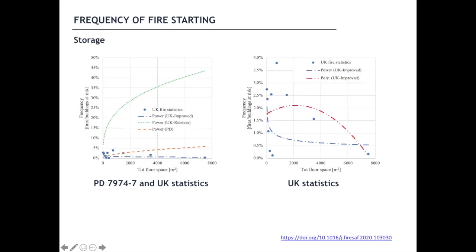In storage, the highest curve is represented by a power law with a positive exponent, but PD 79747 assumes higher values than those described in UK statistics, where a second-order polynomial function best approximates the data. In the US, a third-order polynomial function well describes the distribution.